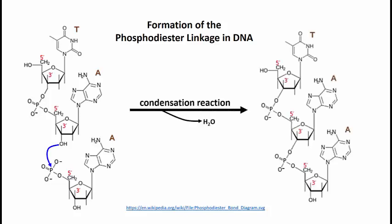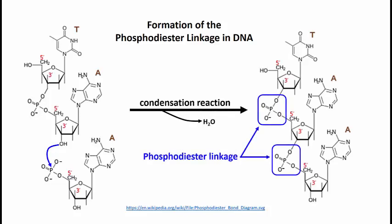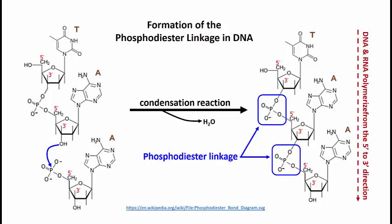Note that a nucleic acid has directionality — we say it has a 5' and a 3' end. The 5' end refers to the nucleotide with a free phosphate group on the 5' carbon of the sugar, shown at the top here. The 3' end refers to the free hydroxyl group on the number 3 carbon of the sugar at the other end. By convention, we read in the 5' to 3' direction.